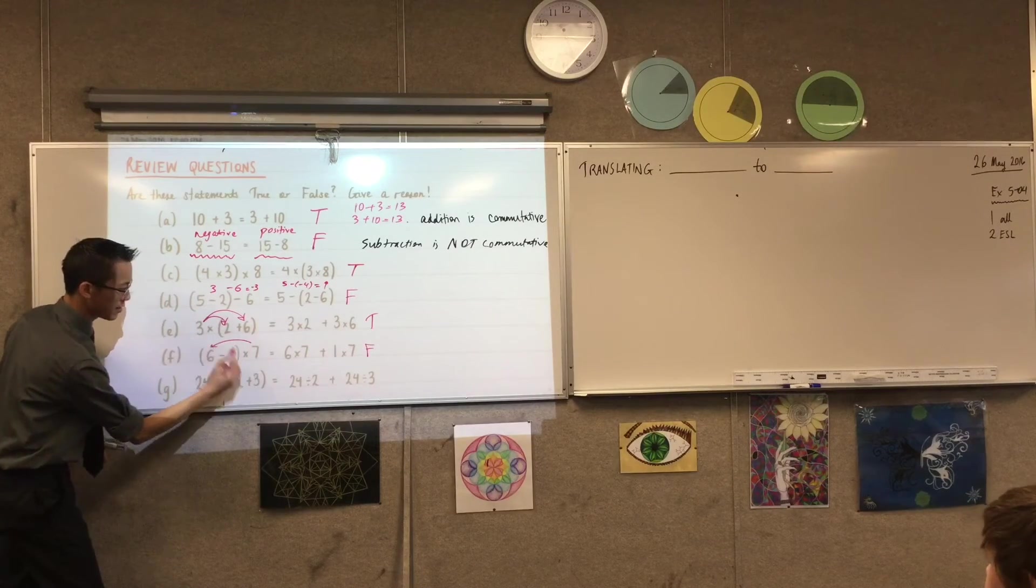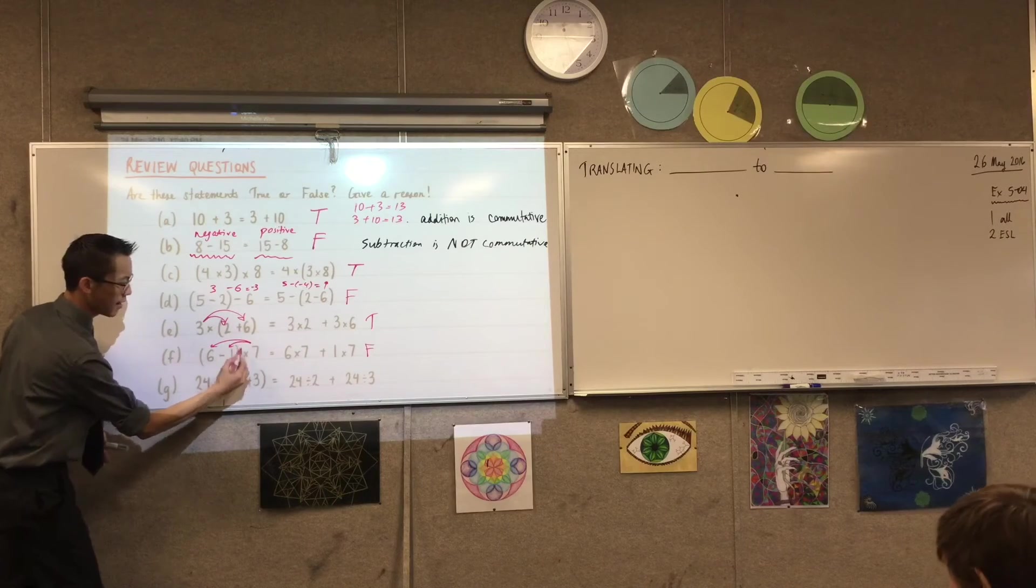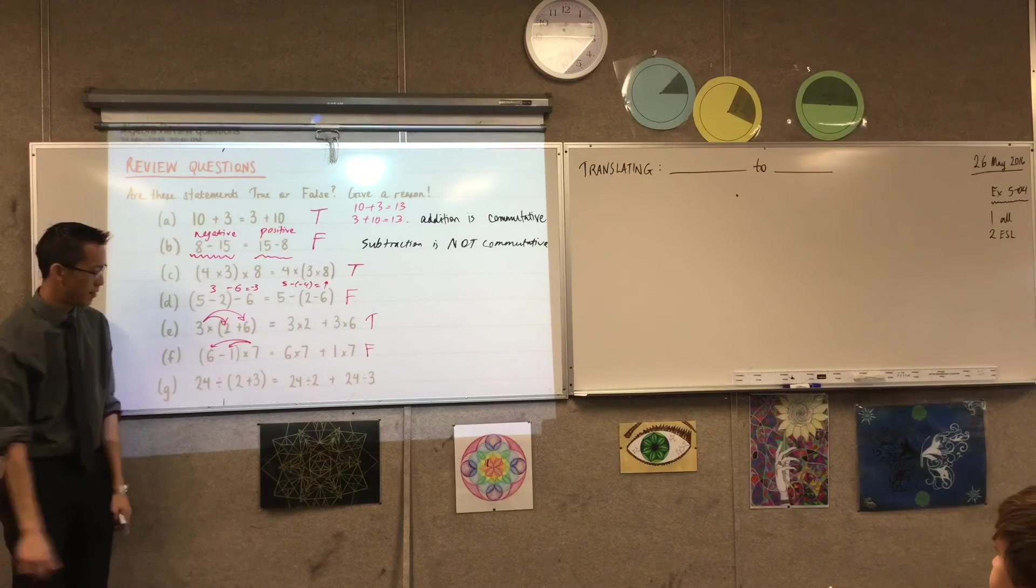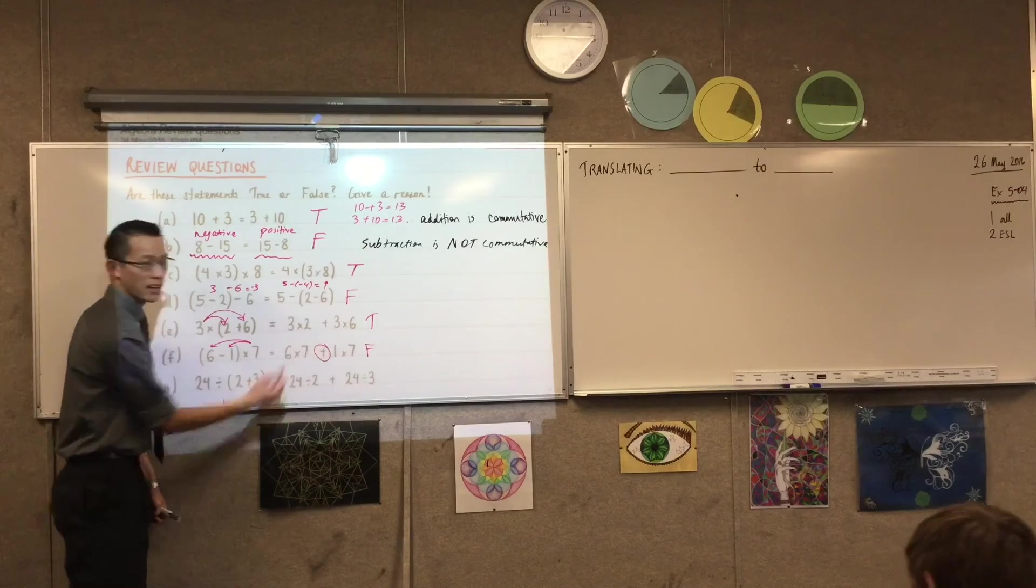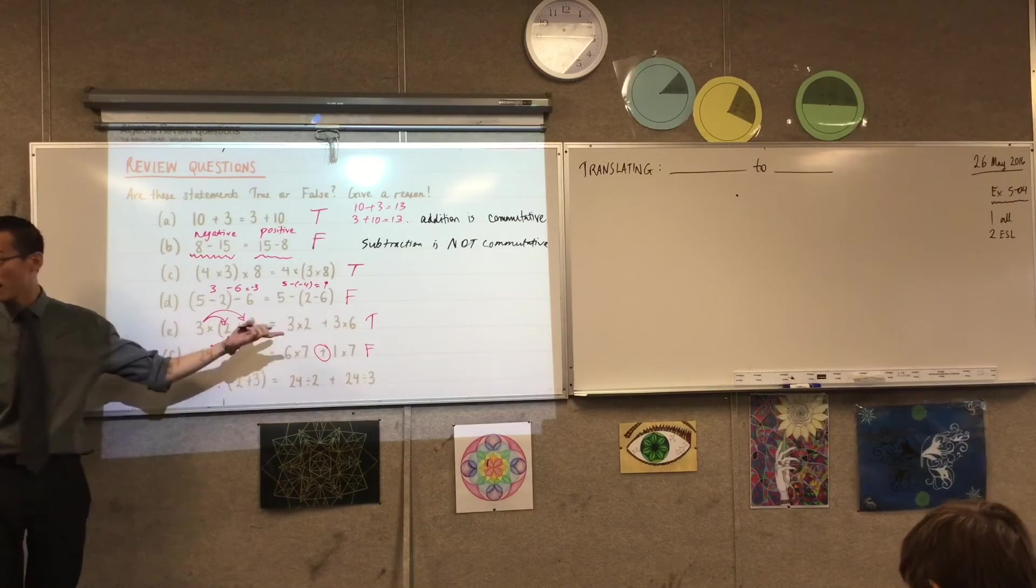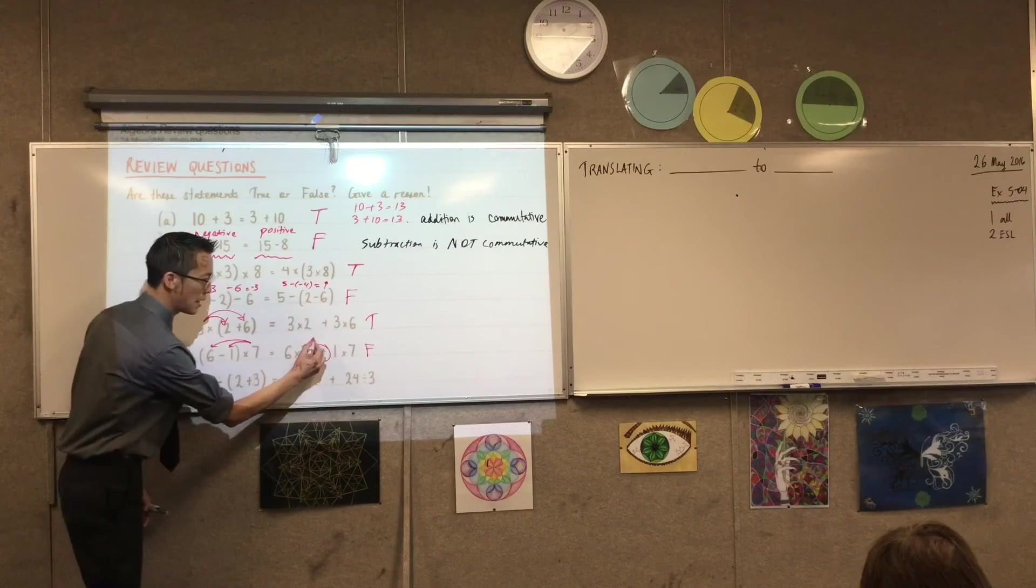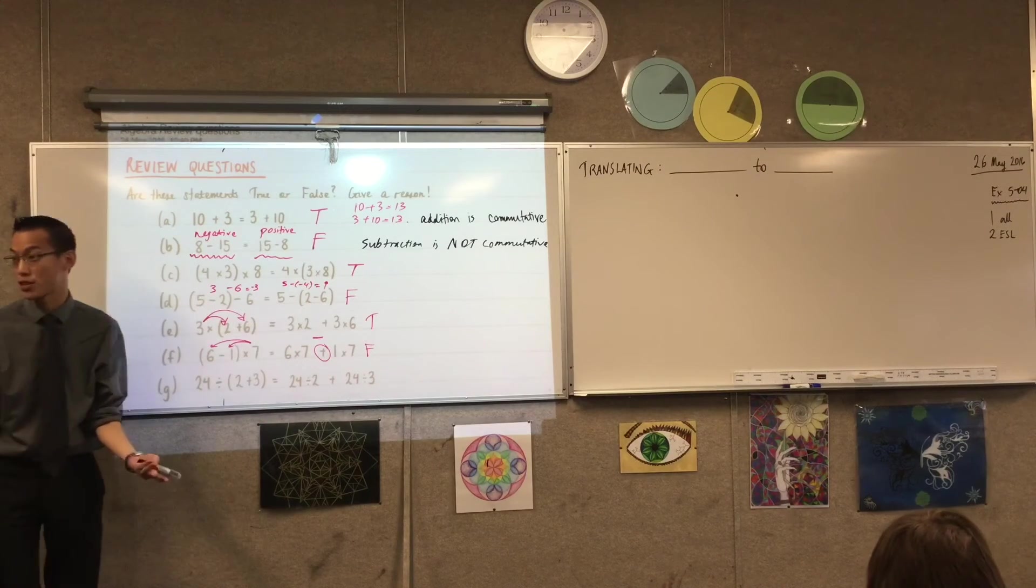So how would I change this to make it correct? I'm going to adjust the sign, right? It really should be subtraction. And then it would be true. Okay? All right. Last one. Last one.